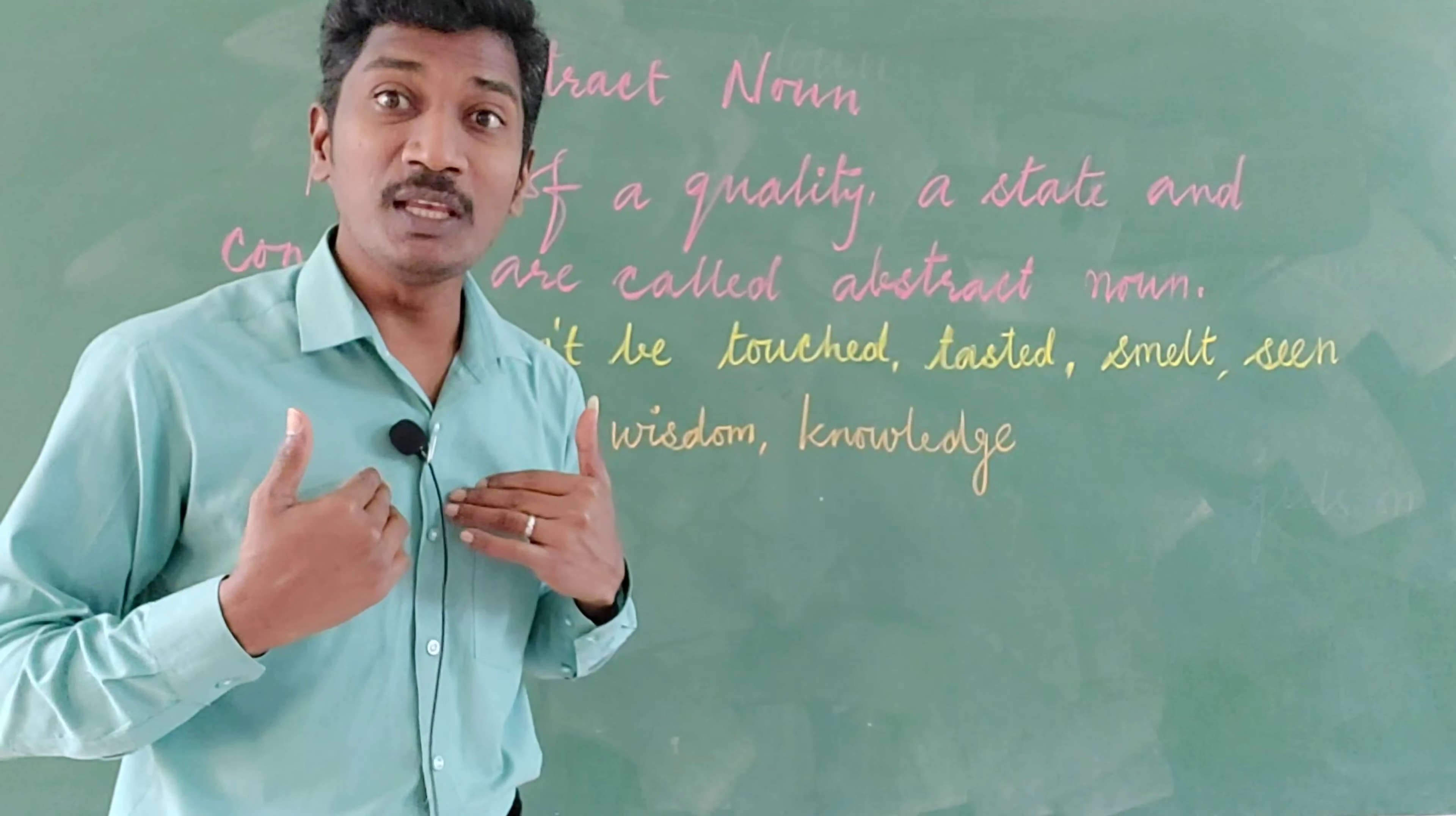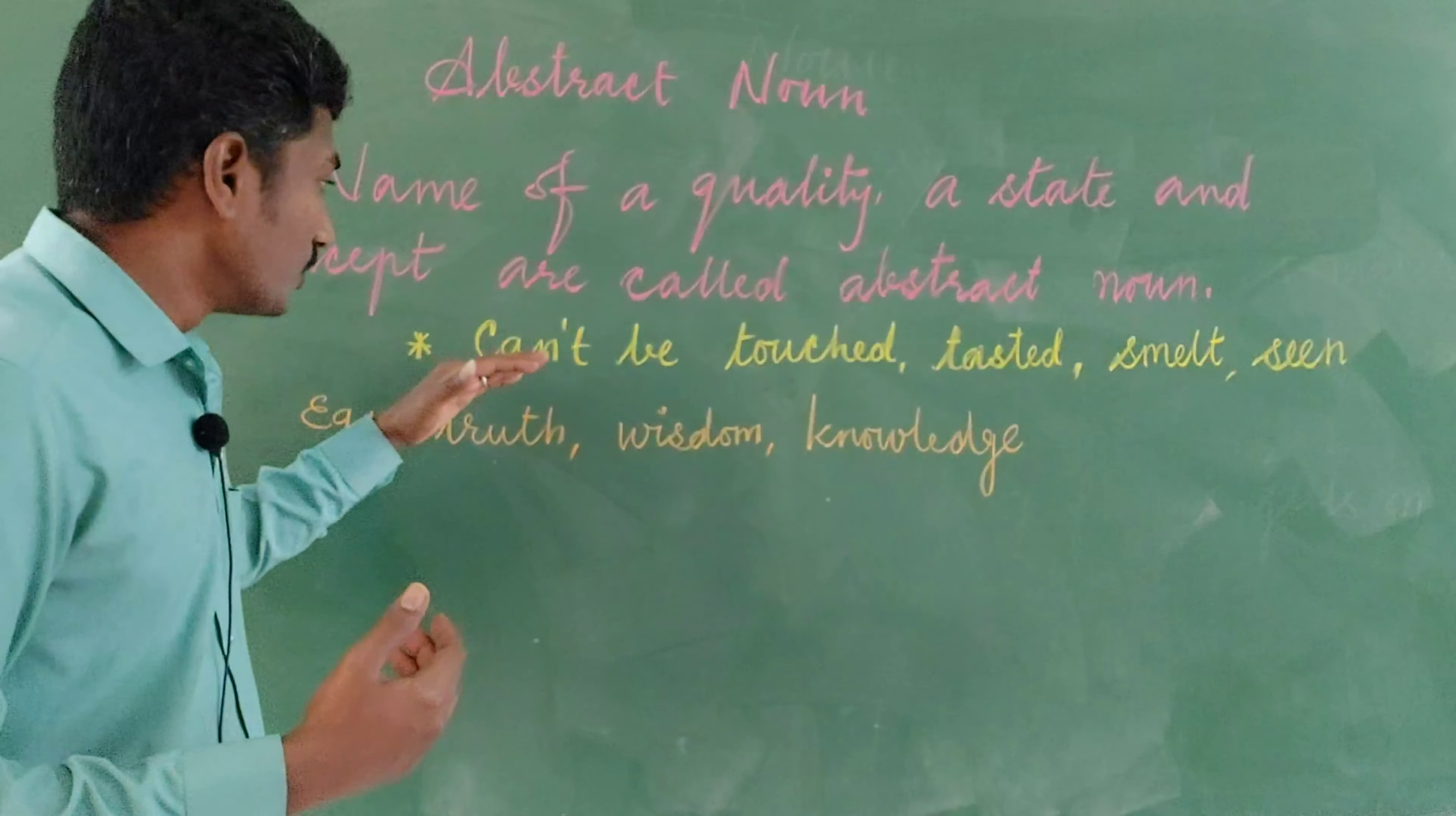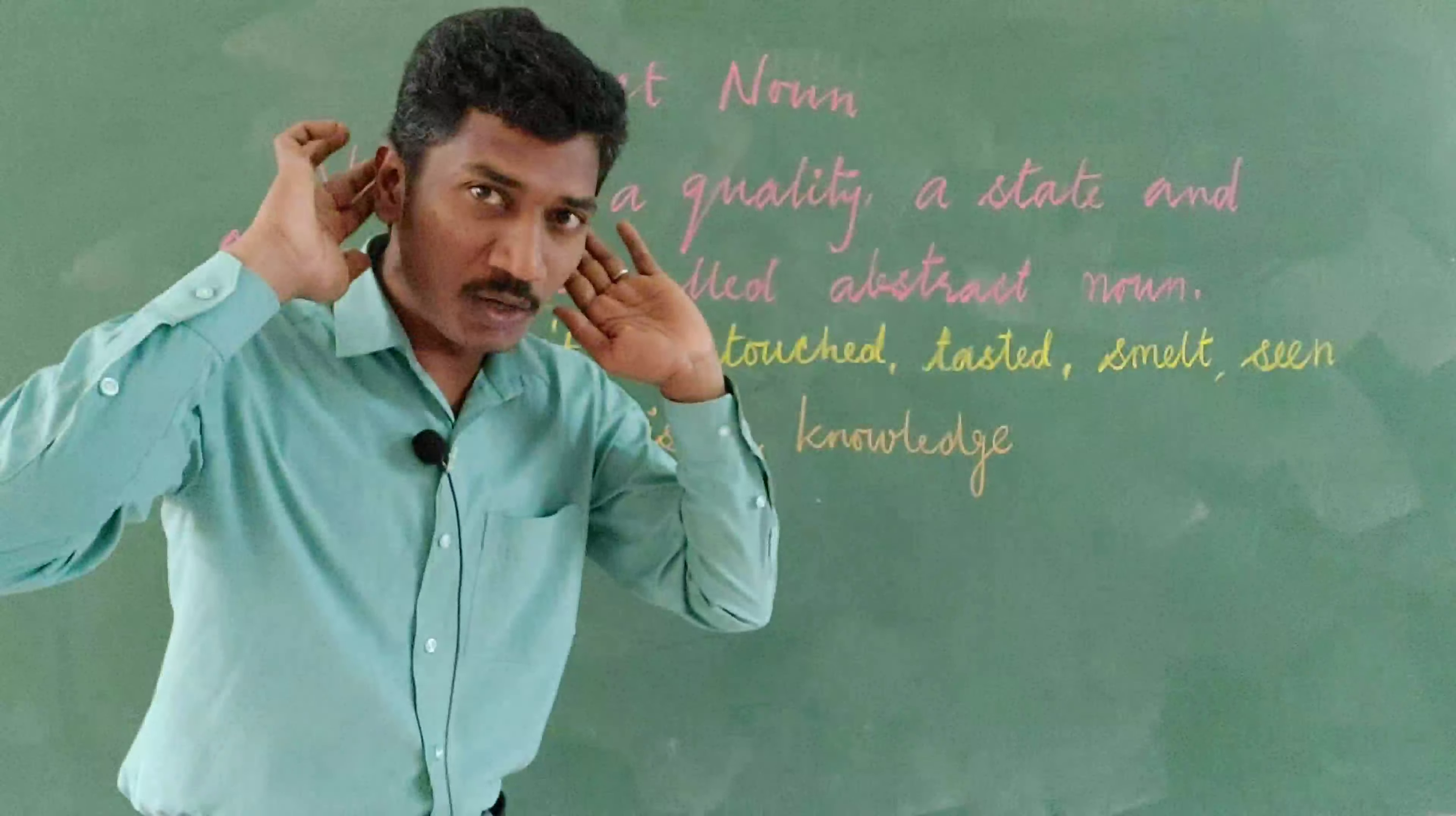What we can do is we can feel, we can feel the love which is given by mother - that we can understand. So, cannot be touched, tasted, smelled, or seen are called abstract noun. These all are not visible to our eyes. They are not visible or we cannot hear.